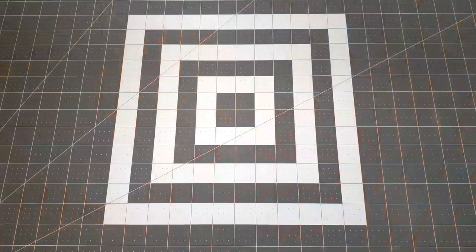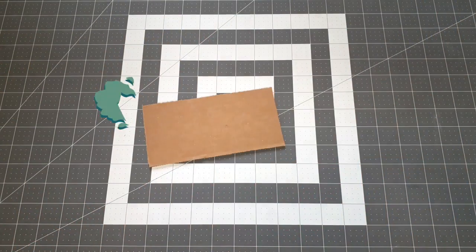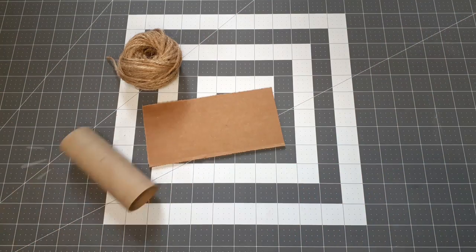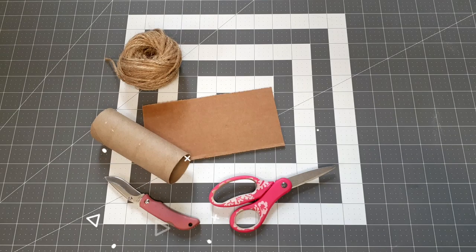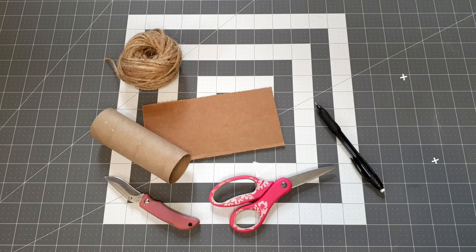So let's start with the first DIY, which is a hanging toy. You'll need some cardboard, twine, toilet paper tube, scissors or a knife to cut out your cardboard, a pencil, and a hot glue gun.